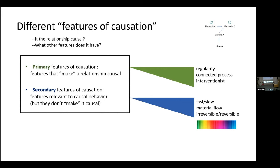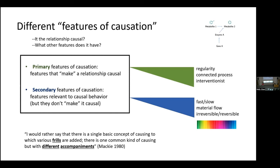There's a nice quote from Mackie that helpfully captures this. Mackie states: 'I would rather say that there is a single basic concept of causing to which various frills are added. There is one common kind of causing, but with different accompaniments.' Many philosophers of science are using a single account of causation — the interventionist account — but there's something else going on: we're also interested in the frills, the bells and whistles. And it's really important to be clear that these don't make a system causal; they're just extra things that matter.